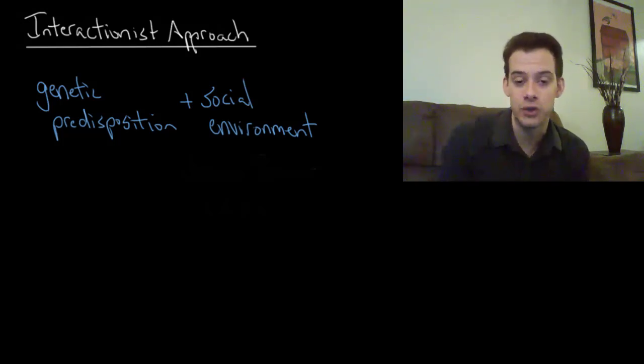This brings us to consider the role of the social environment more carefully when it comes to language acquisition. This brings us to what's called an interactionist approach to language acquisition. The interactionist approach recognizes that we seem to have a genetic predisposition for language acquisition that other animals don't have, but that we also have a social environment that plays an important role in the full development of language ability.